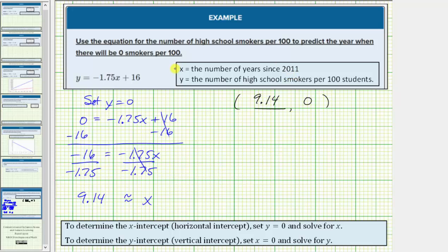So to determine the actual year based upon this model when there would be zero smokers per 100, we need to add this x value to the base year of 2011. So we'll just say x is approximately 9, and therefore 2011 plus 9 is equal to 2020.